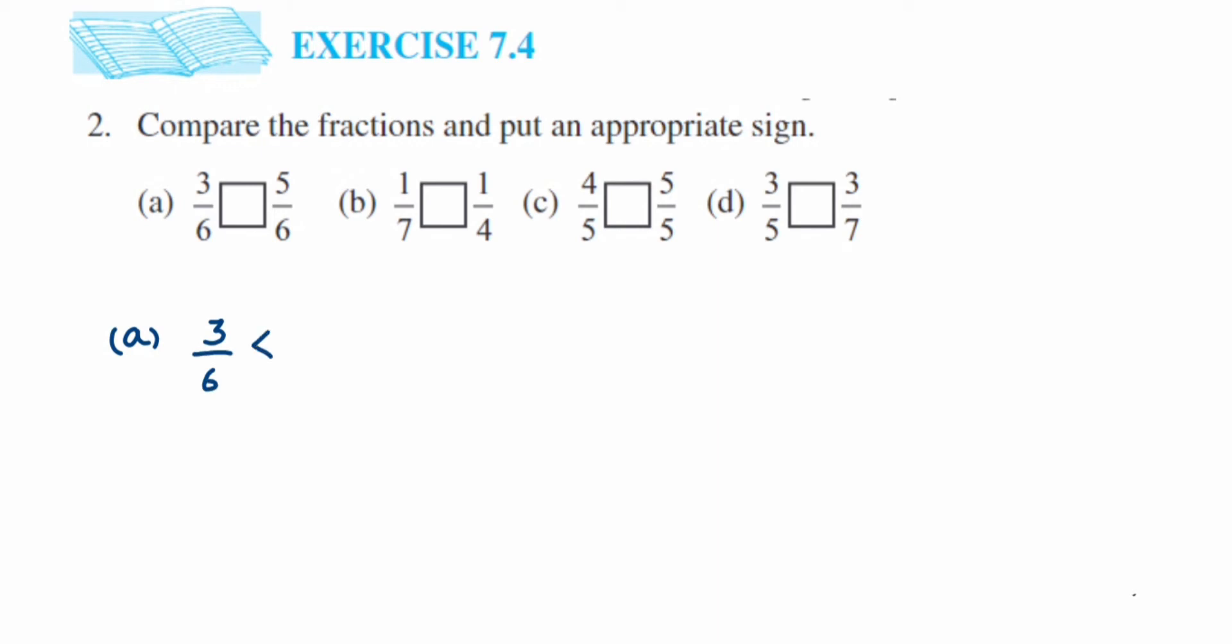Like fractions are very easy, you have to check the numerator, that's it. Moving on, in the second question we have 1 by 7 and 1 by 4. This is an example of unlike fraction because denominators are different but numerators are same.